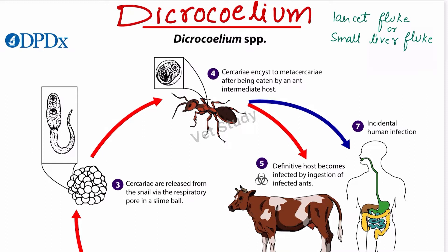Why do we call Dicrocoeliium the lancet fluke? Because of its shape — its shape is lancet. That is why we call it the lancet fluke. The typical feature of this parasite is its egg. The egg of this parasite is flat on one side, just like the egg of Oxyuris equi. The eggs are operculated and embryonated. These are some specific features about the morphology of this parasite.